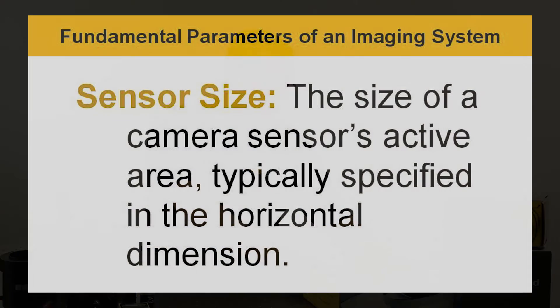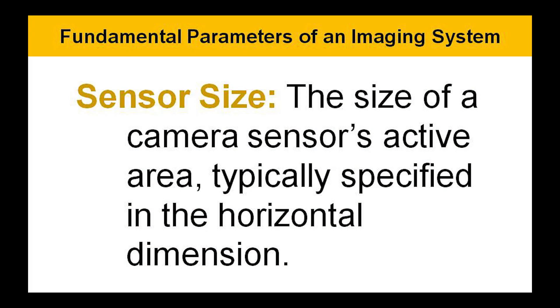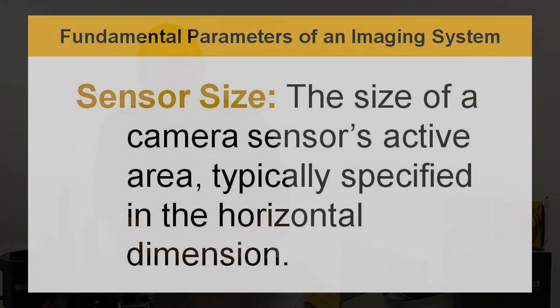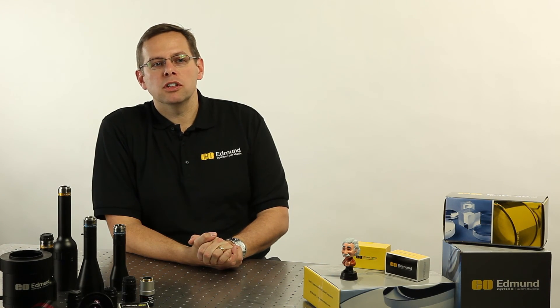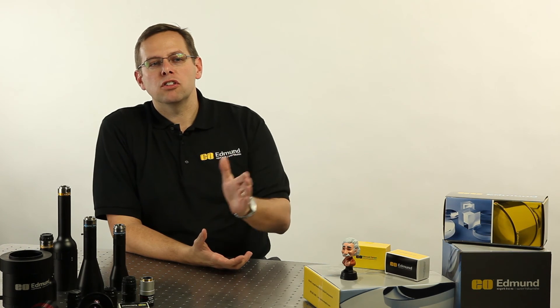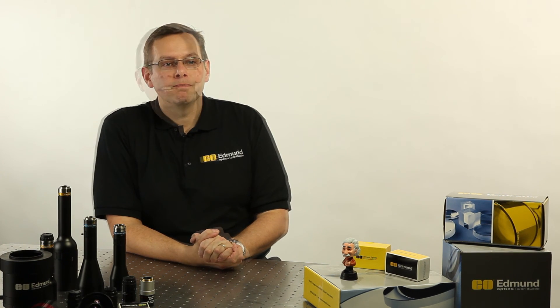Sensor size is usually defined on an imaging system instead of lenses with a maximum sensor coverage that it can handle, usually in a format of a half inch, third inch, two-third inch, or some physical dimension size. It's important to verify that with the sensor you're using and understand that the larger the coverage of the lens, it can handle everything that's a smaller size than that in the system.